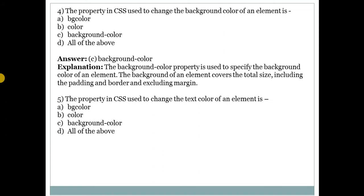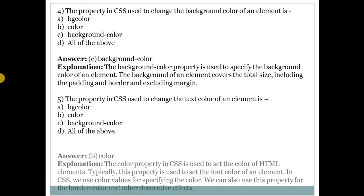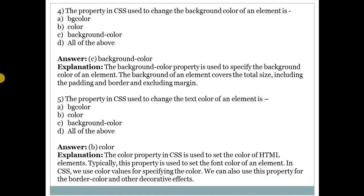Fifth question: the property in CSS used to change the text color of an element? Answer is B — color. The color property is used to set the color of HTML elements, including font color. We use color values to specify colors, and this property can also be used for border color and other decorative effects.